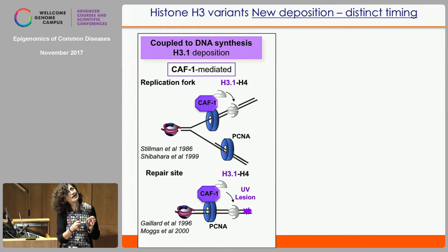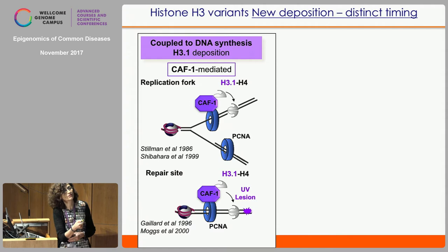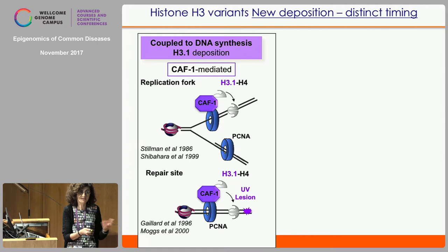For what happens during DNA synthesis, there's a CAF-1-mediated deposition of newly synthesized histones where CAF-1 exploits its interaction with PCNA to enable deposition of the replicative variant as a dimer with H4. That happens at the replication fork, but also at sites with a patch of synthesis such as those observed during nucleotide excision repair or other repair events.